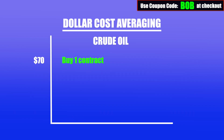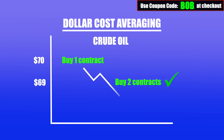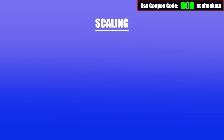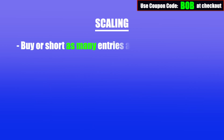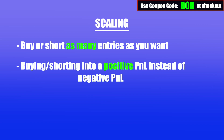Let's use crude oil as an example. Say you buy a contract to go long on crude oil at $70. The trade goes against you and drops to $69. To improve your cost average, you decide to buy two additional contracts at $69 — Apex will allow this. However, if the trade continues against you and crude oil drops to $68, Apex will no longer allow you to buy more contracts because you only get the one addition. With scaling, however, you can buy or short as many entries as you'd like, because unlike dollar cost averaging, with scaling you're buying or shorting into a positive P&L. Scaling into winning trades is allowed as much as you want, but dollar cost averaging into losing trades is only allowed once.